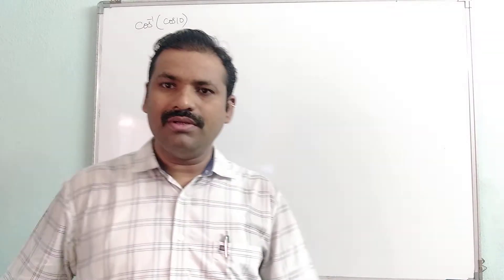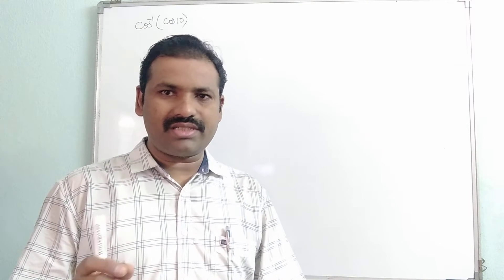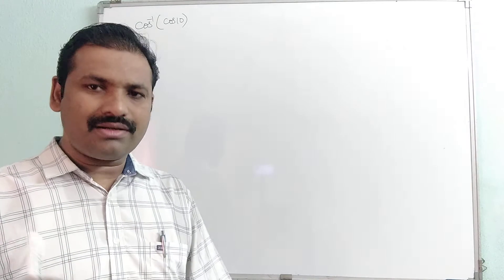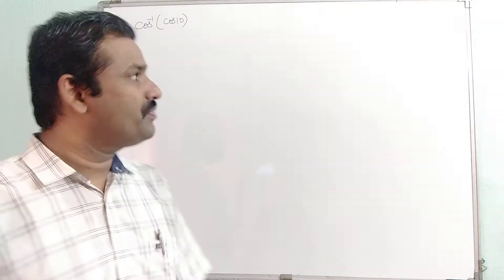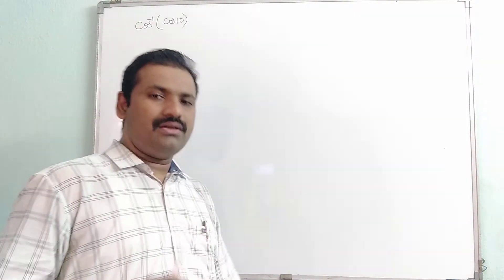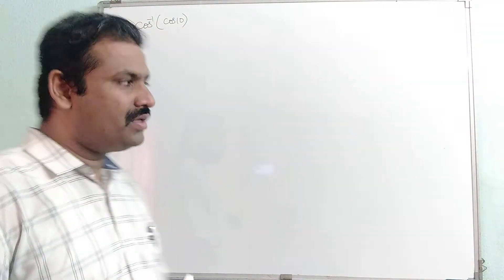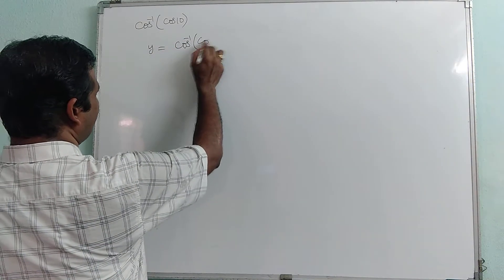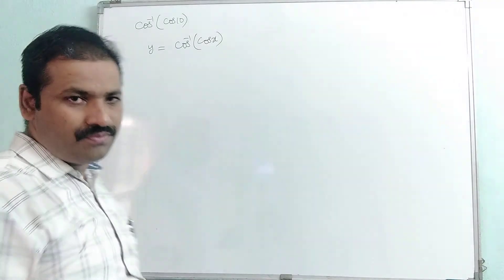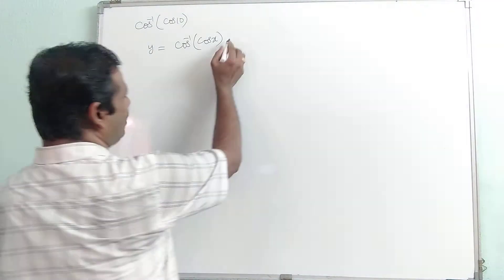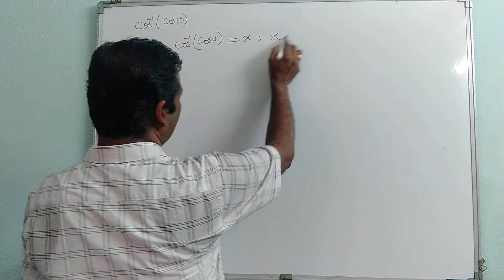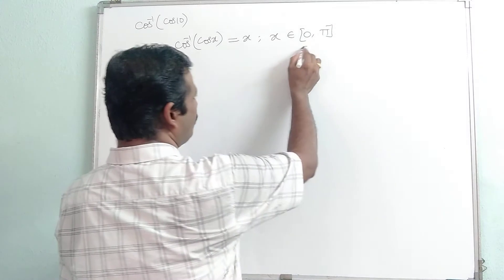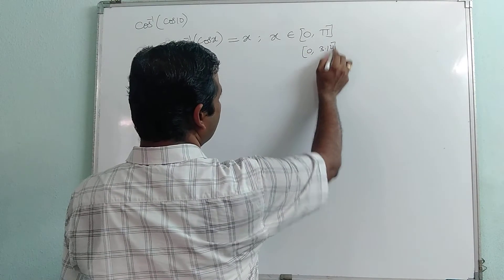Good morning everyone. In this video we discuss cos inverse of cos 10 — that means how to find cos inverse of cos 10, cos inverse of cos 5, and similar values. Let us see what is the graph of cos inverse of cos x, that is y equal to cos inverse of cos x. The principal domain of the cos function is the interval x belongs to 0 to pi, which is 0 to 3.14.